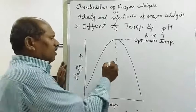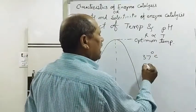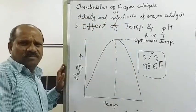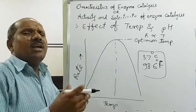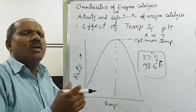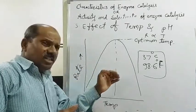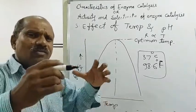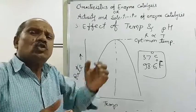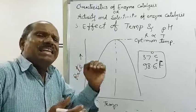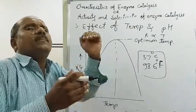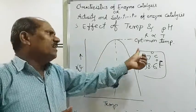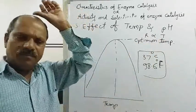In the human body, the optimum temperature is 37°C (or 98.6°F). When body temperature goes beyond this, enzymatic activity decreases or stops completely. This is why a body temperature higher than the optimum is dangerous for human life — the biological activities dependent on enzyme catalysis are stopped or decreased.